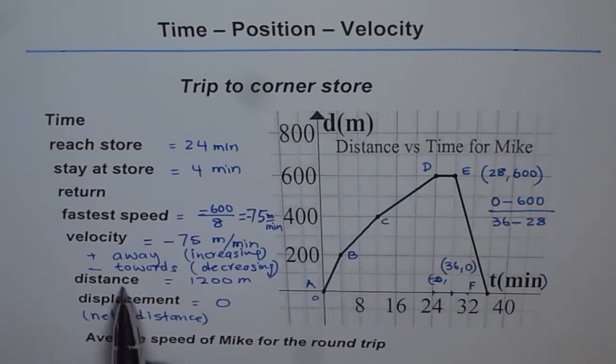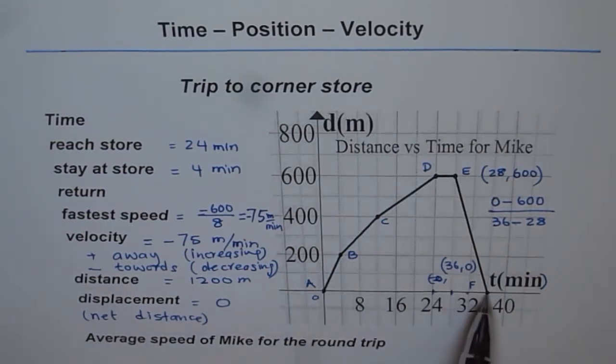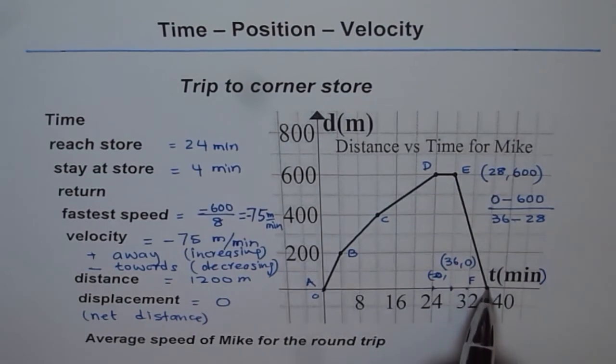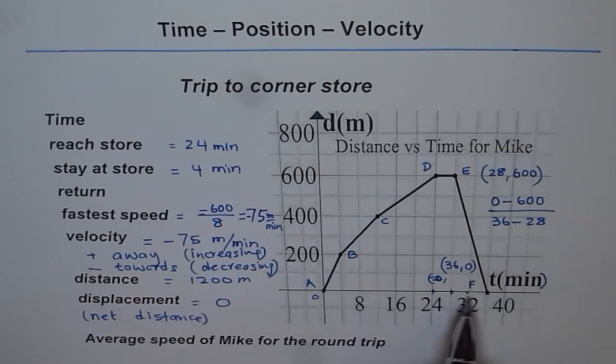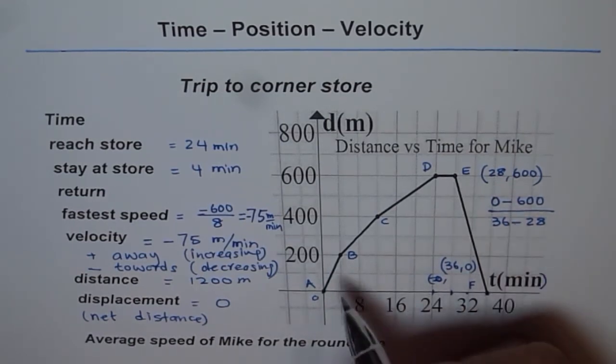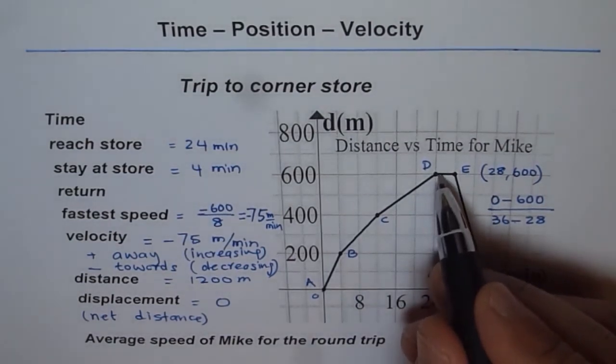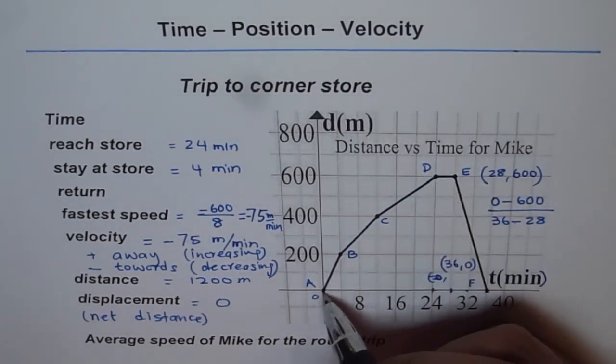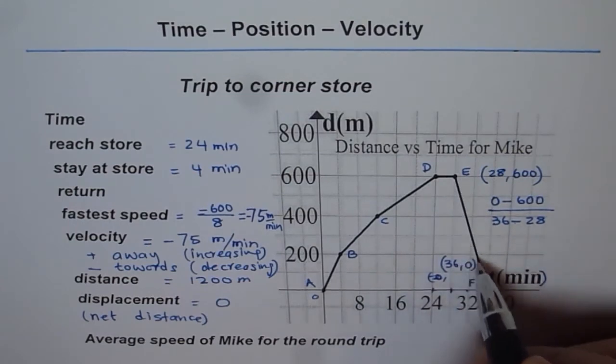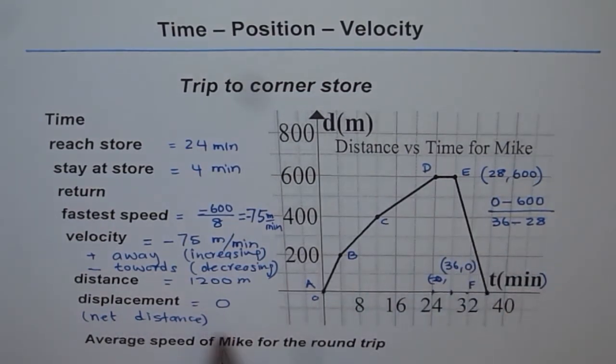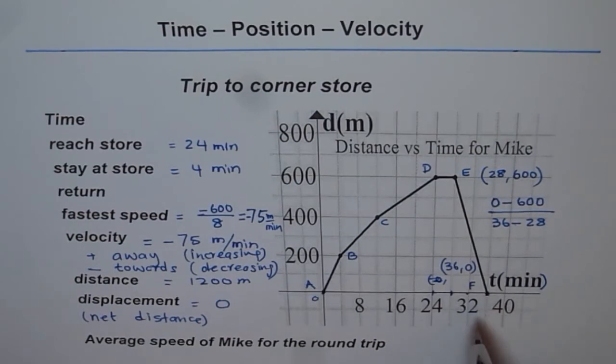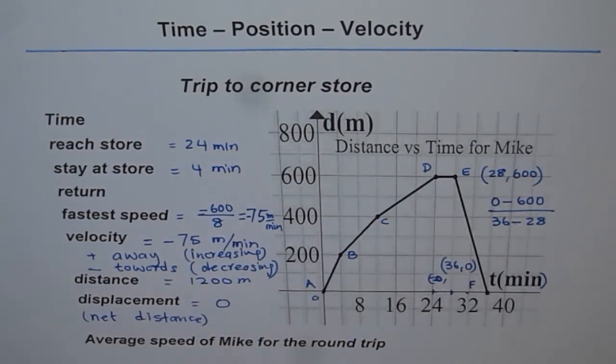Displacement is change in distance. There is no change in distance if you consider point A and F. So net distance is the displacement, and in our case it is zero. If you see from A to D, displacement and distance may be same because you are going in the same direction. Once you return, distance is going to increase, distance traveled. But the displacement is going to be different. In this case, displacement becomes zero. That is a new thing which you have learned now from distance versus time graph.